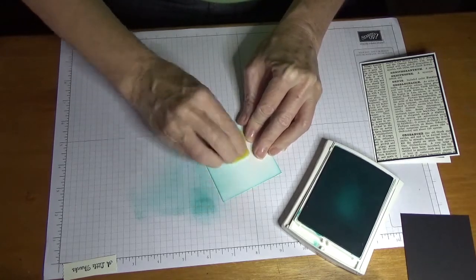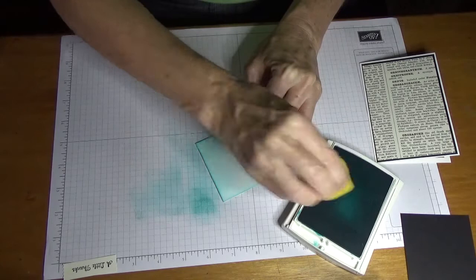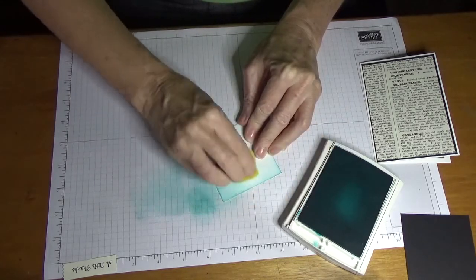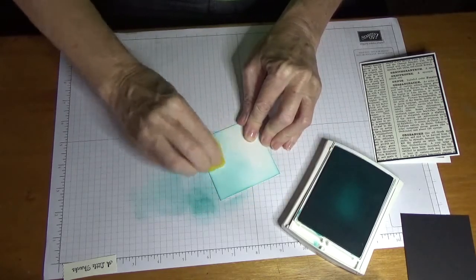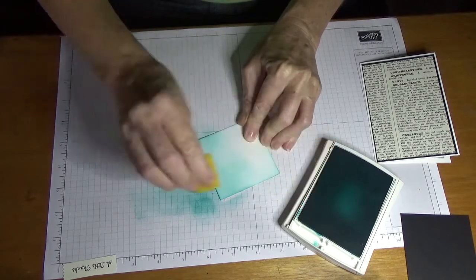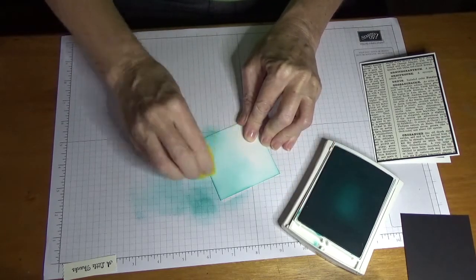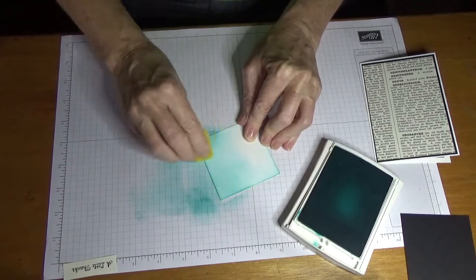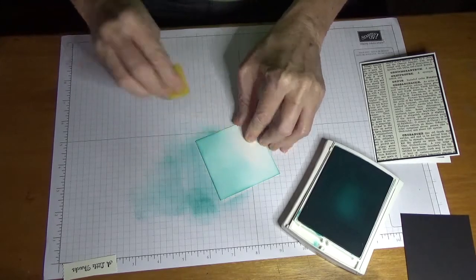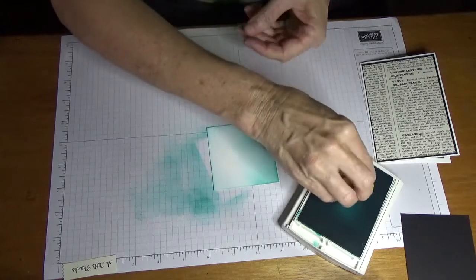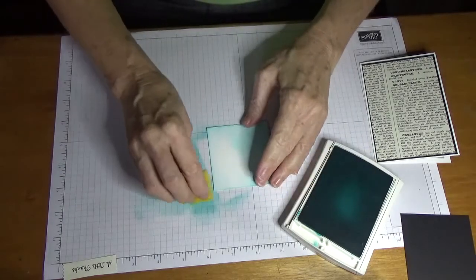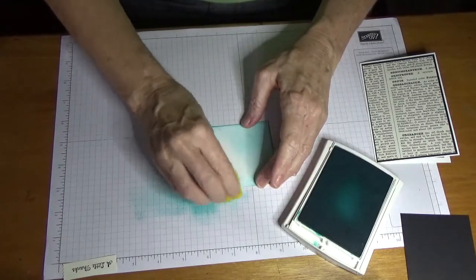And it's up to you. You could just use a different color corresponding cardstock if you didn't want to do the sponging. But for those that know me, sponging is one of my favorite techniques that I use quite a lot. I think it makes a lovely background, and this Bermuda Bay color is just lovely on black.